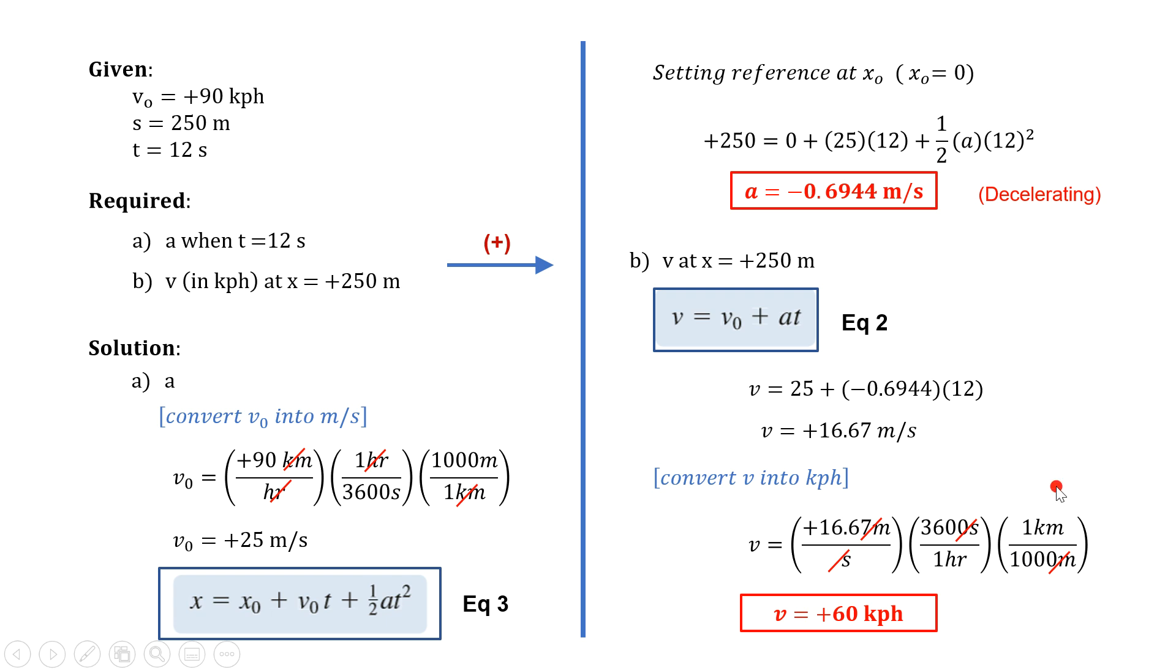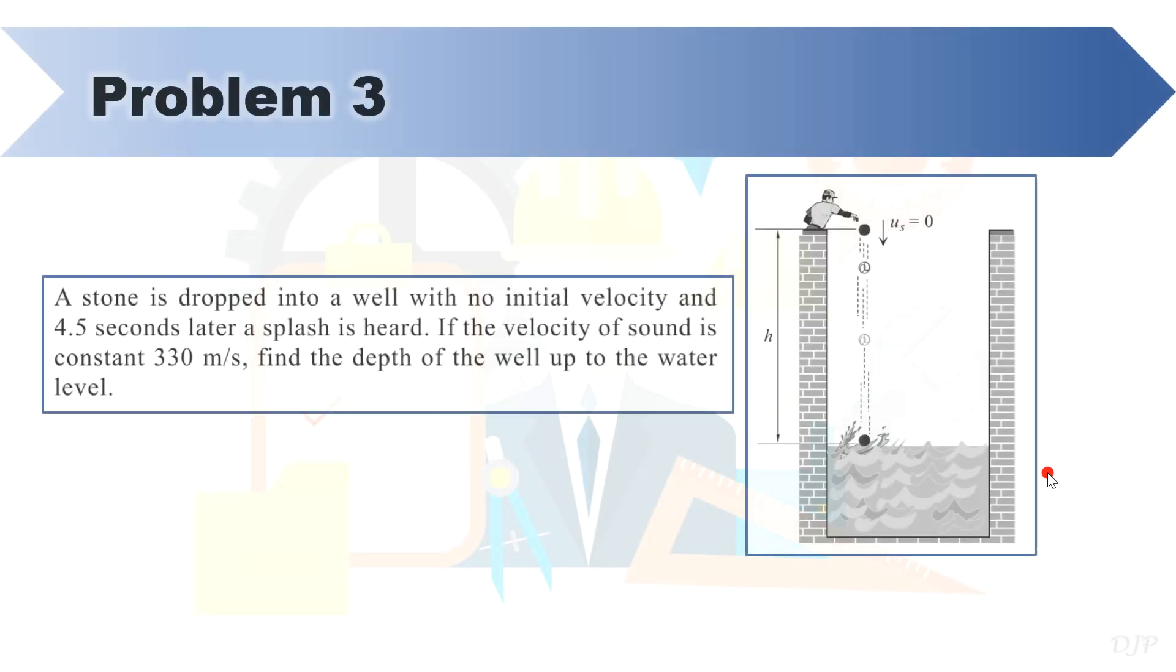Now, let's proceed with our third sample problem. We have here a stone dropped into a well with no initial velocity, and 4.5 seconds later, a splash is heard. If the velocity of sound is constant with a value of 330 meters per second, find the depth of the well up to the water level.